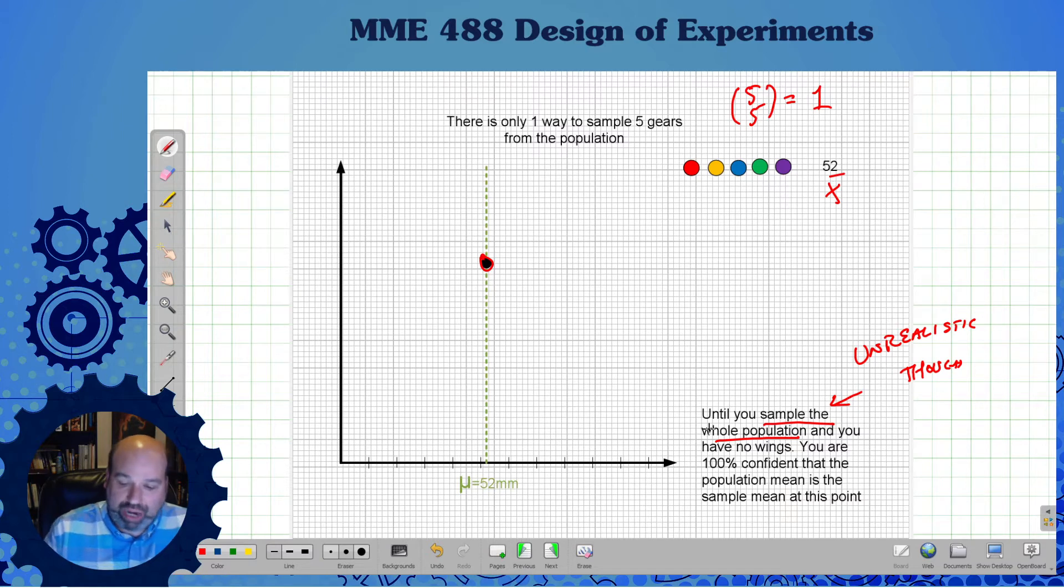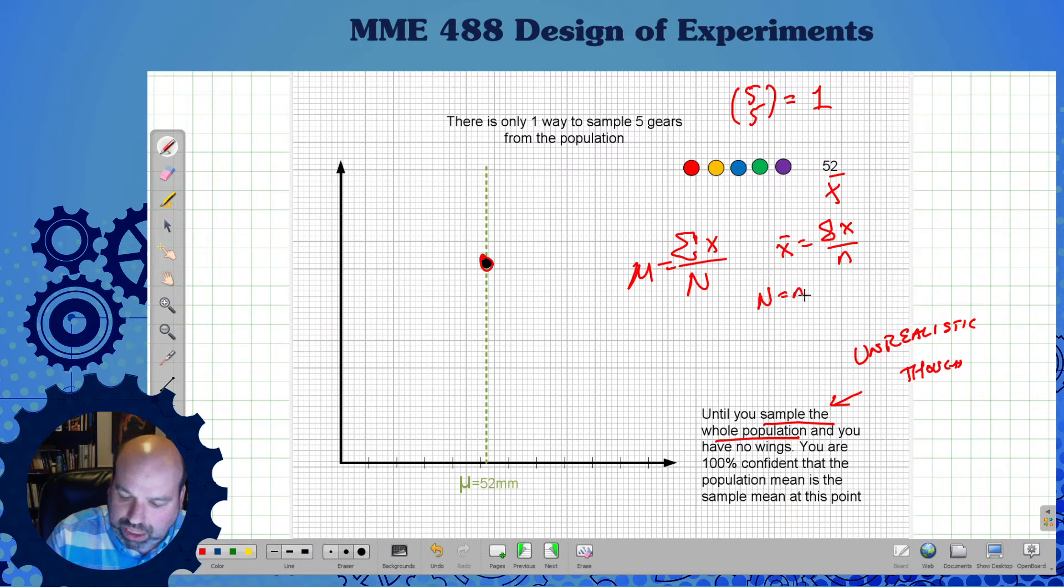This is just a thought experiment. There's no way you're ever going to do that. I'm 100% confident that population mean is the sample mean. It has to be. I literally sampled everything, calculating the sum of x's over big N. That's mu. In reality, my x-bar is the sum of x over little n. At this point, N equals N. So my mu and my x-bar have to be the same thing.